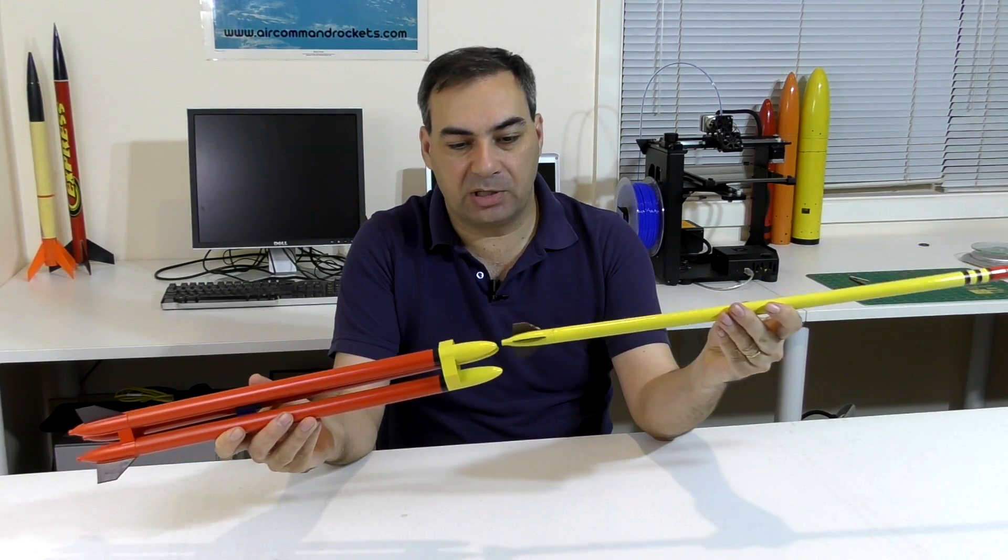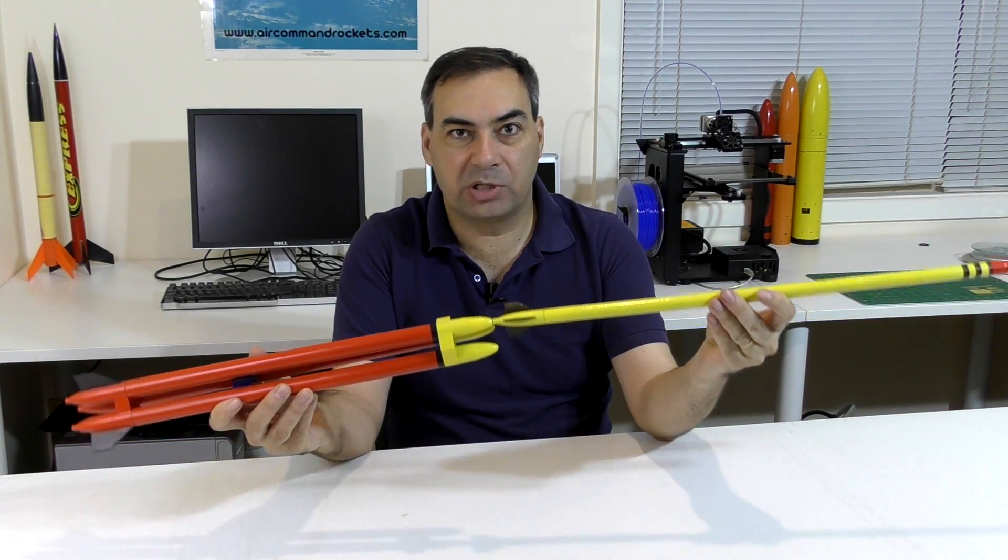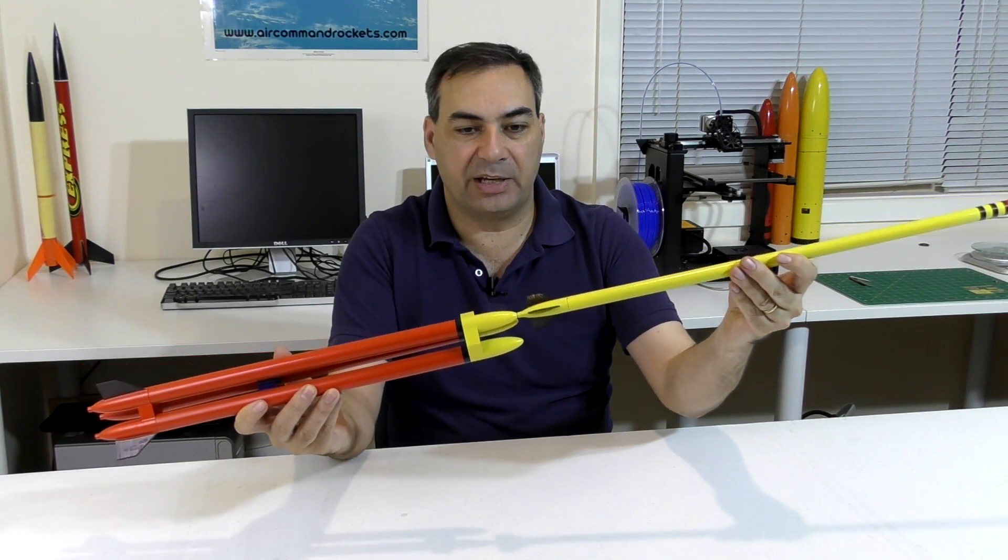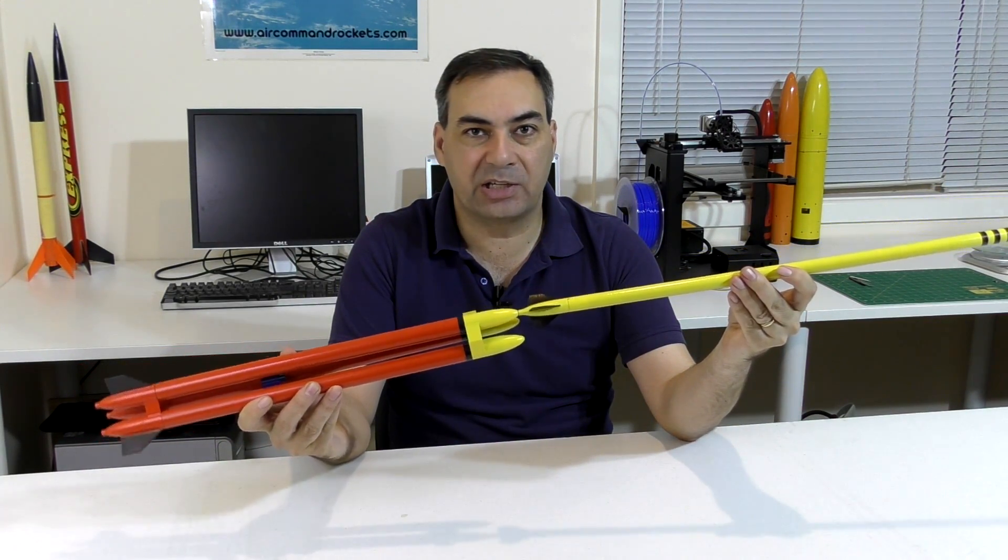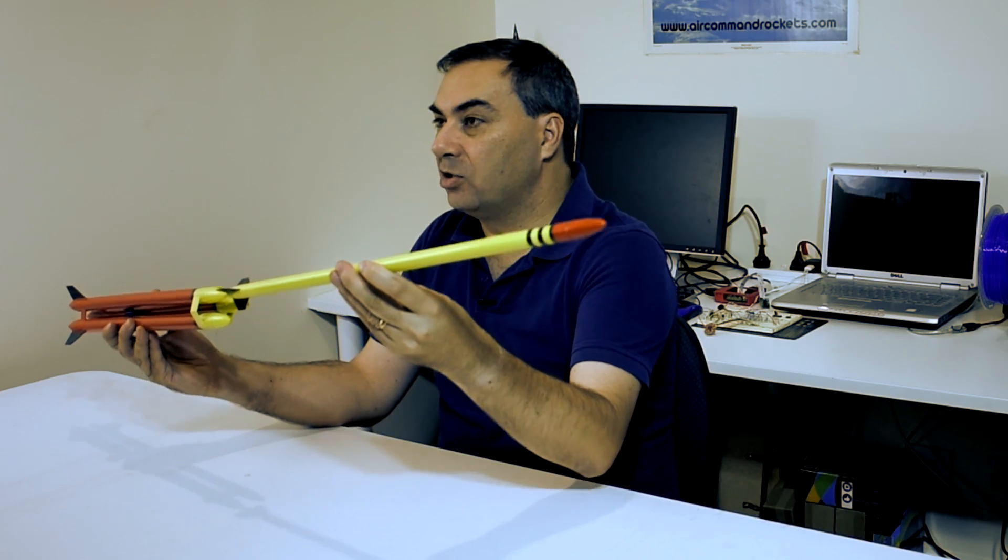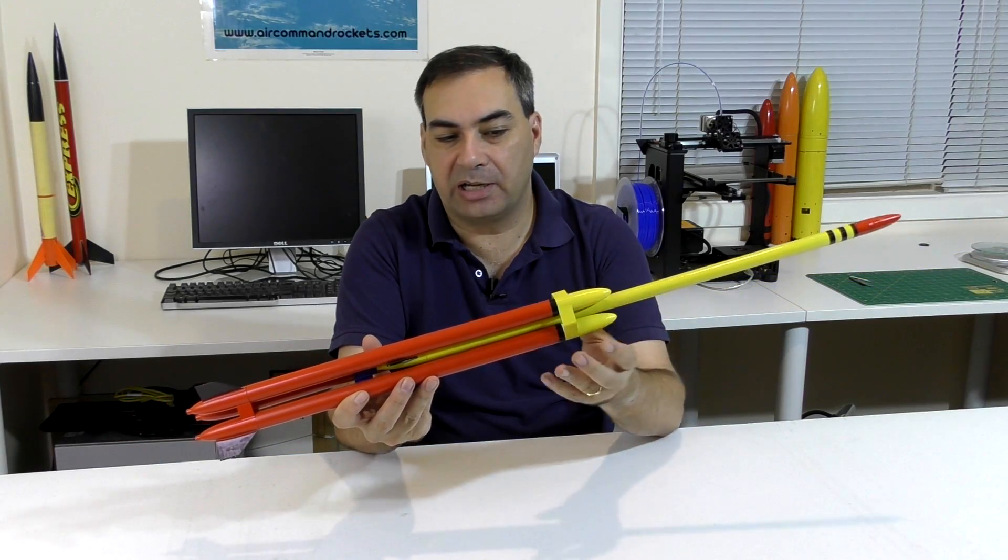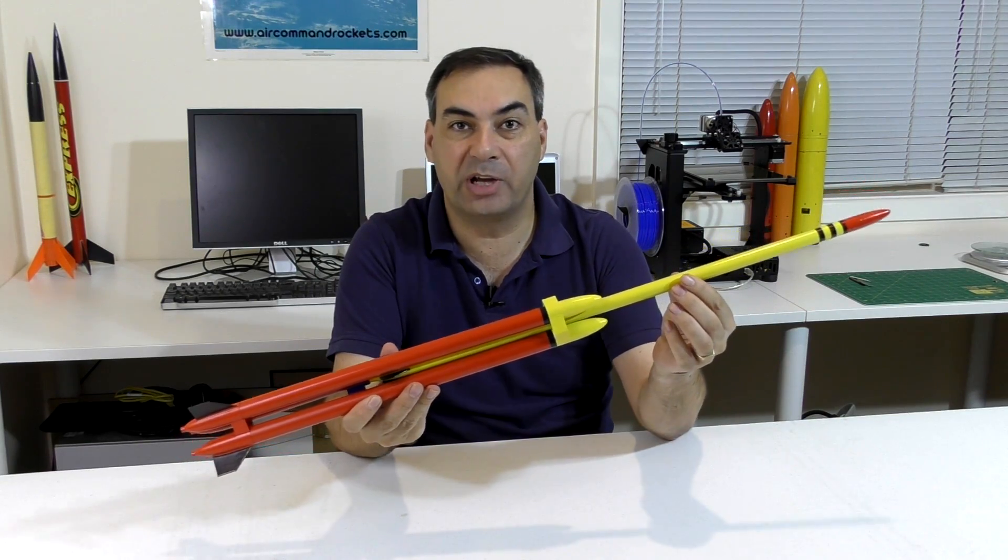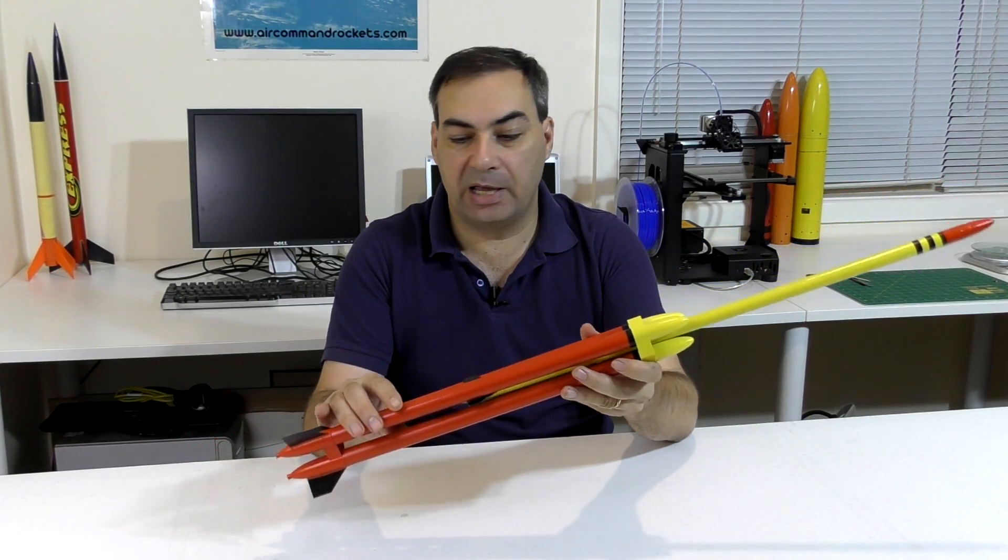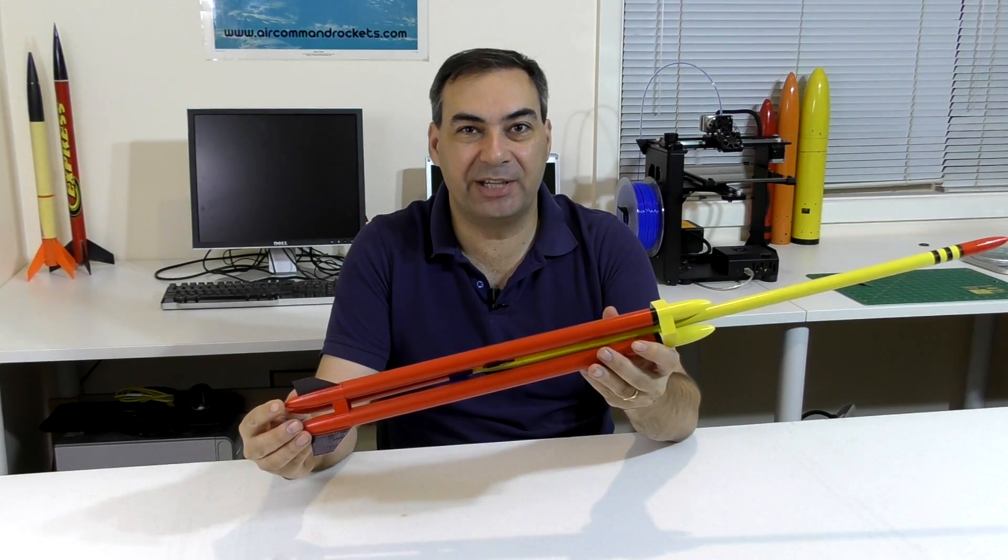Had we mounted the sustainer right on the end of a booster, it's very hard to keep those aligned, and especially during high accelerations you're likely to snap the staging mechanism. When it's located inside like this, the booster segments provide support for the rocket. Let's have a look at it in detail.